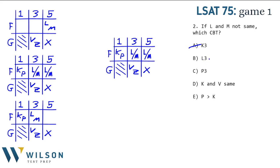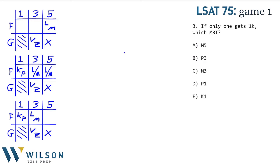Can L get $3,000? Yes, right there in world two. How about P? No, P can't get $3,000. K and V the same? No — K gets $1,000 and V gets $3,000. P more than K? Not possible — they're both getting $1,000.